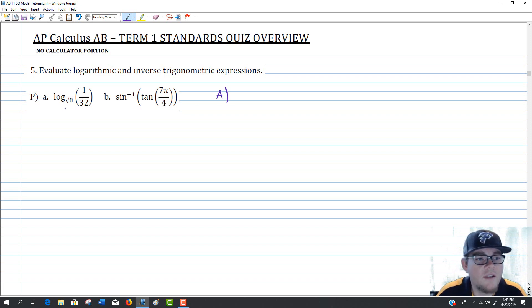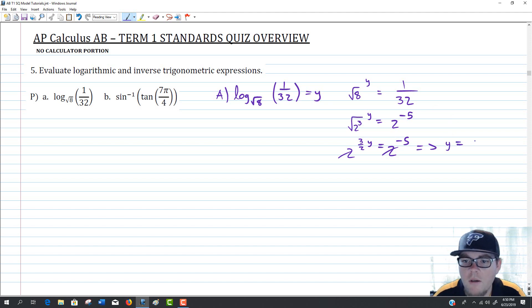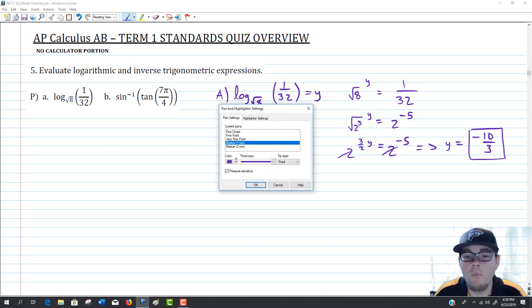For the first one, it's asking us once again to deal with a log expression. We're dealing log base root 8 of 1 over 32. If we set that equal to y, we'll get root 8 to the y equals 1 over 32. Once again, as I look at this, I see base 2s. I see 8s and 32s. So I'm going to rewrite this as powers of 2. This is going to be the square root of 2 to the 3rd to the y is equal to 2 to the negative 5th. The square root is the same thing as the 1 half power. So this is really 2 to the 3 halves y is equal to 2 to the negative 5. Given that information, we can log base 2 both sides. We can get rid of the bases. We're going to end up with our power being equal to negative 10 thirds. Really not that different, just involved a little bit more work when you found that common base.